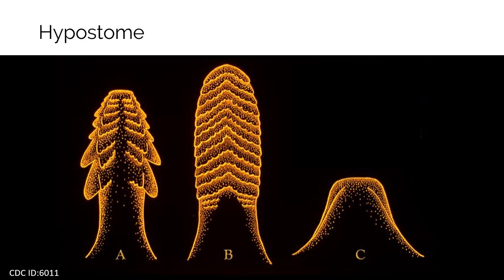If you start to identify ticks using a stereoscope, you will also want to look at the dentition, or the number of rows of teeth or little razor-sharp parts on the side. You would count over from the midline of the hypostome. You would also want to observe if the end of the hypostome is pointed or blunt.